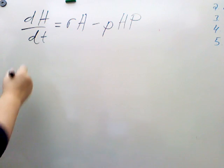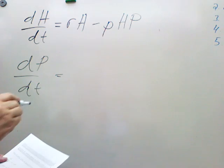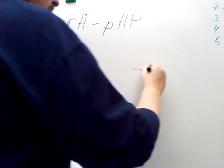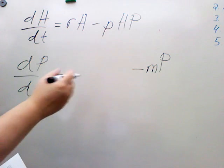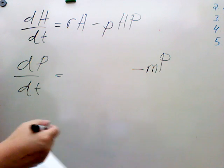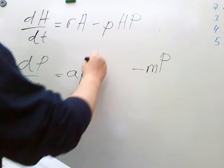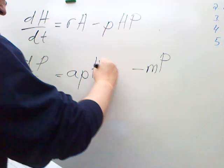The predator relation, dP/dt, is dependent on the normal exponential decline of predators as defined by the mortality rate m, plus their growth rate, which is fueled by eating prey, that's a, p, H, P.